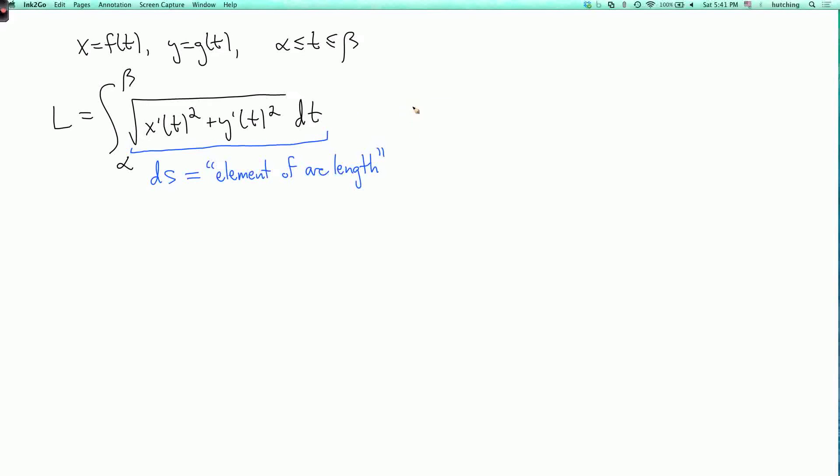By the way, the case you probably saw before in single variable calculus is when the curve is a graph of a function. And then x and t are the same thing, so you parametrize it by x. And then ds is the square root of 1 plus dy dx squared dx. So this is what you integrate over x to calculate the length of a graph. But this formula for parametrized curves works for more general curves, which are not graphs.